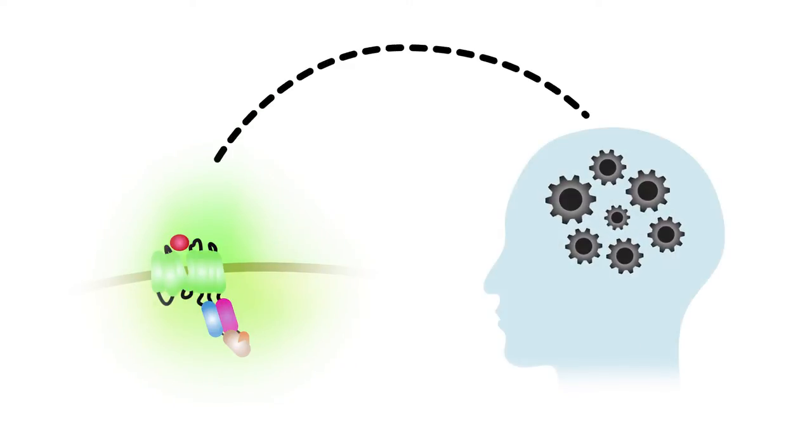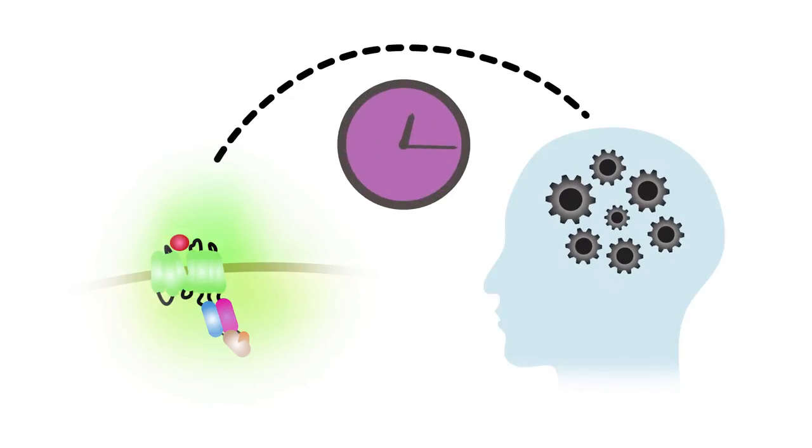The problem with these sensors is that scientists couldn't use them to link a neuromodulator's effects to a specific behavior, because they couldn't pinpoint when the sensors were activated.